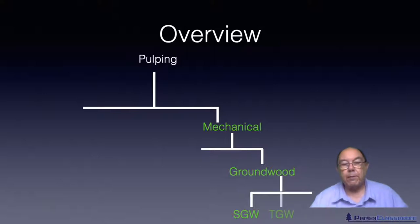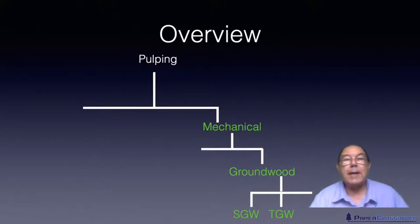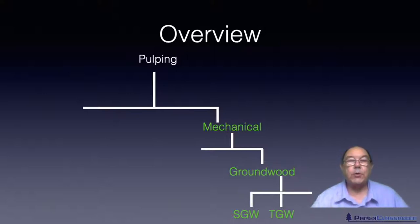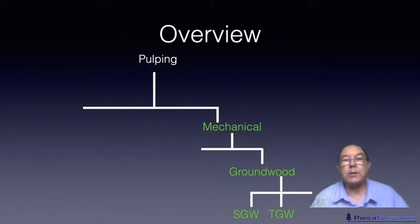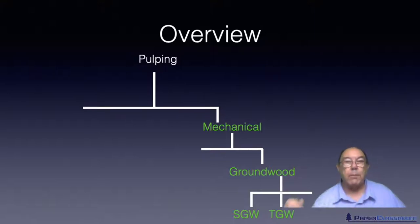Following on from that, they came up with the thermal ground wood process, which involves soaking the logs in hot water prior to or as they are being ground down. Putting hot water there creates extra heat and extra energy in the system, so the lignin gets hotter, becomes softer, and you do less damage as you rip the fibers out of the tree trunk.